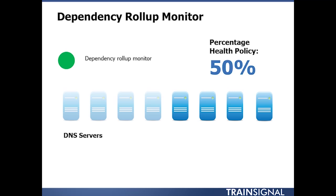Once it goes below 50 percent, then we'll go to a red state. But until that point, the whole purpose of having multiple DNS servers is to remain operational, so we're not going to get too worried about things if we lose a single or even up to four of our eight DNS servers.